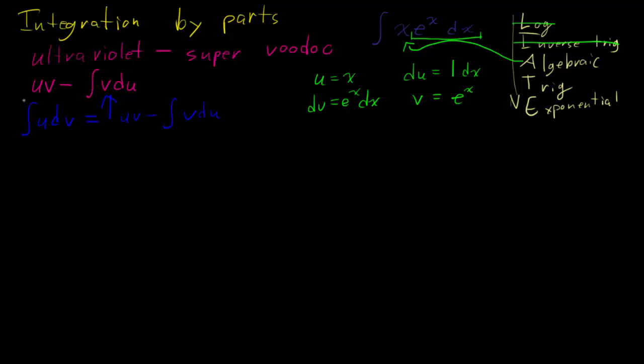Now, we just plug it into our little formula here. And we say that u times v minus the integral of v du. And we solve that, and we say x e to the x minus e to the x, which is equal to e to the x times x minus 1 plus c.